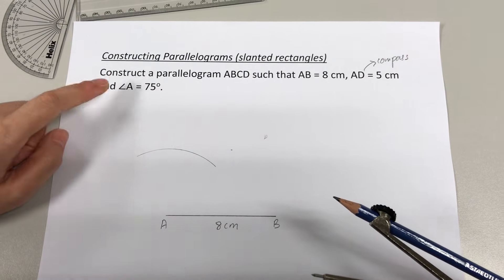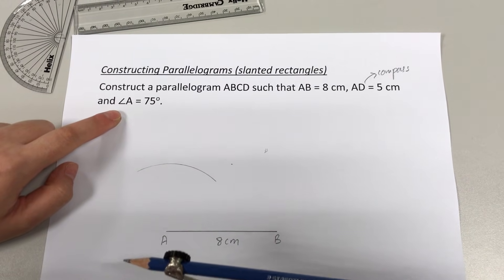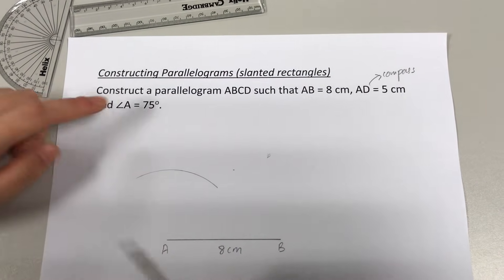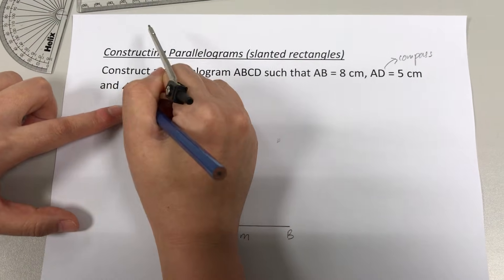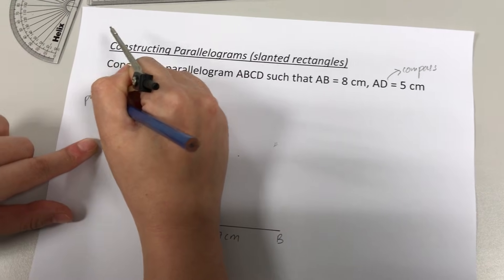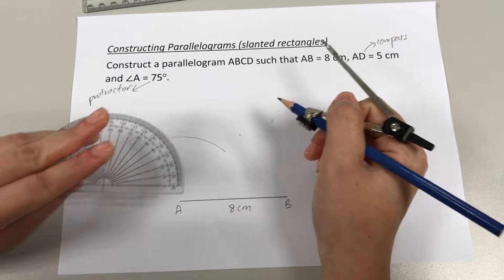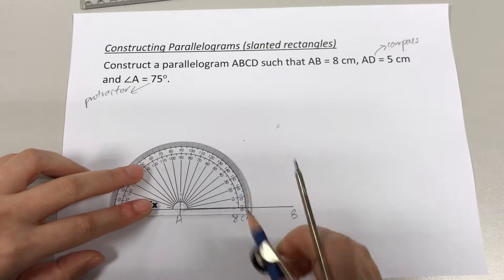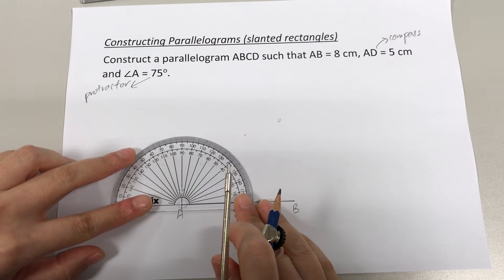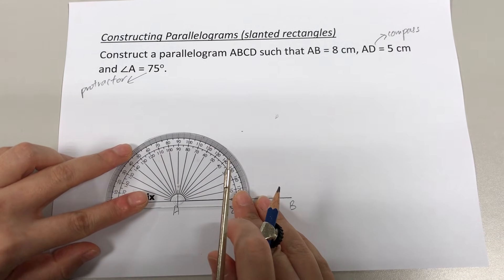I'll move on to the next, which is angle A is 75 degrees. Always when you see angle values given, it has to be drawn using your protractor. This is for angle A, so I'm going to place my protractor at point A. The middle of the protractor is at point A now.